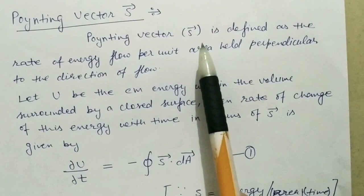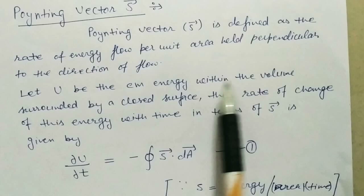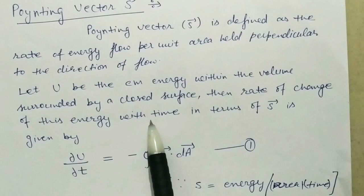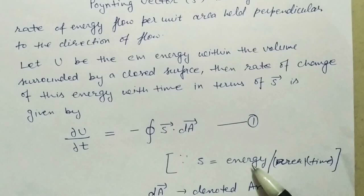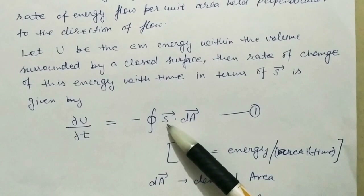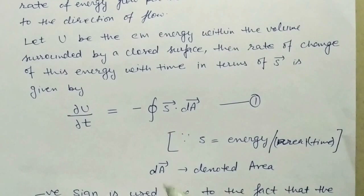Now let us consider that U be the electromagnetic energy within the volume surrounded by a closed surface. Then the rate of change of this energy with time in terms of S is given by del U by del T. S is energy per unit area per unit time, so S multiplied by area dA gives us our first equation, where dA denotes the area element.